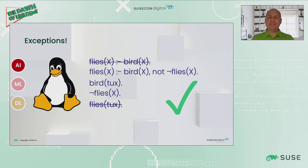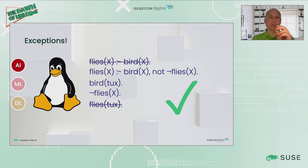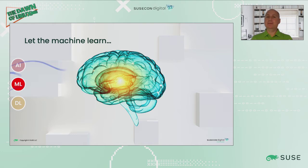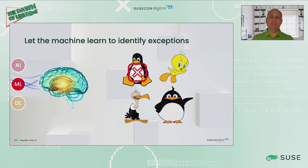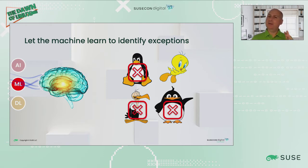Now, what if instead of teaching the machine detail by detail, rule by rule, exception by exception, we could let the machine learn? We could let the machine learn that penguins don't fly, fat penguins fly even less, lame vultures don't fly, but our little friend Tweety flies. Just how do we go about teaching the machine? How do we get to machines that learn?